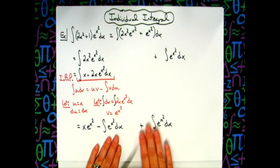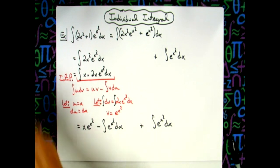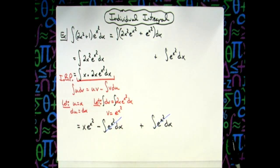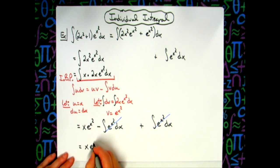Now if you notice these two integrals, one is positive, one is negative. So that's going to allow me to cross those two out. And then the only thing I will have left is xe^(x²) + C.